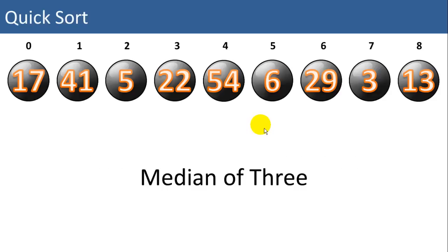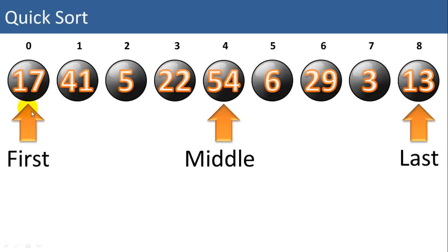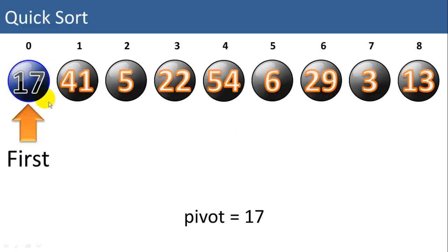For this video, we'll choose the median of three pivots. So what that means is we're going to choose the median of the first value, the last value, and the middle value. In this case, if you look at these three values — 13, 17, and 54 — the first value is the median value. So by choosing the median of three, we ensure that we don't end up with a terrible pivot. We'll move our pivot value into the first position. In this case it's already there, so we don't need to swap it with anything. We set our pivot value equal to 17.